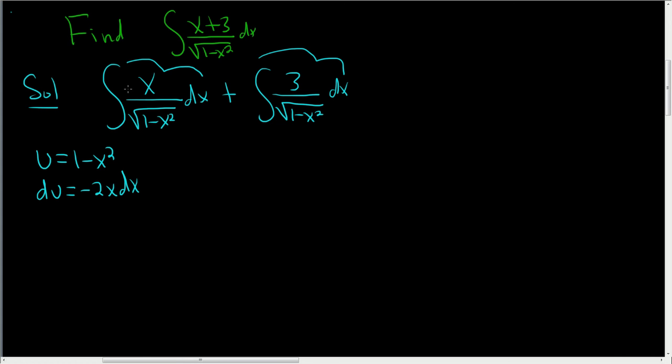Now we don't have a -2 in our integral here, so we'll divide both sides by -2. We end up with -du/2 equals x dx.